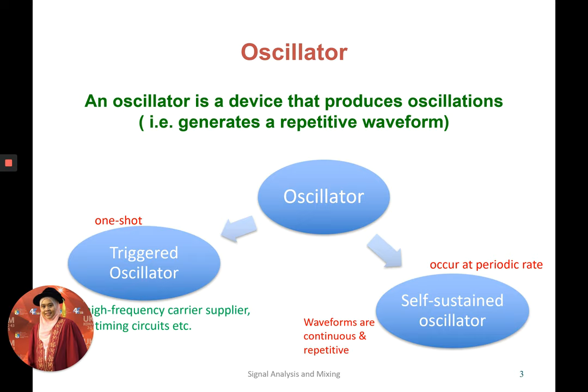What is oscillations? Oscillation is a process where it generates a repetitive waveform or repetitive signal. Oscillator has two categories. First is the triggered oscillator, which produces one shot of signal, used in high-frequency carrier supplier, clock, or timing circuits. Another one is the self-sustained oscillator. This type of oscillator occurs at periodic rate based on what we want the signal to be generated in certain frequency. The waveforms are continuous and repetitive.